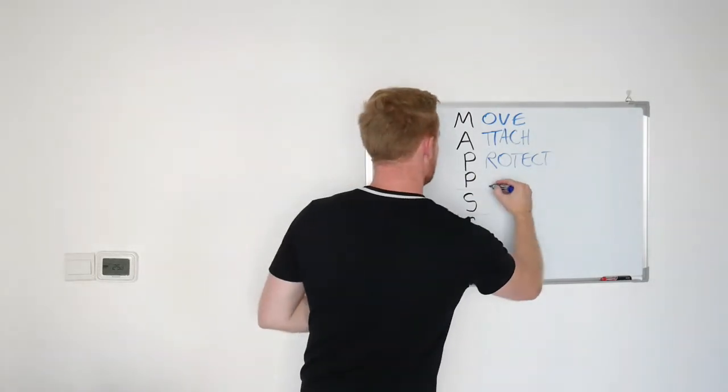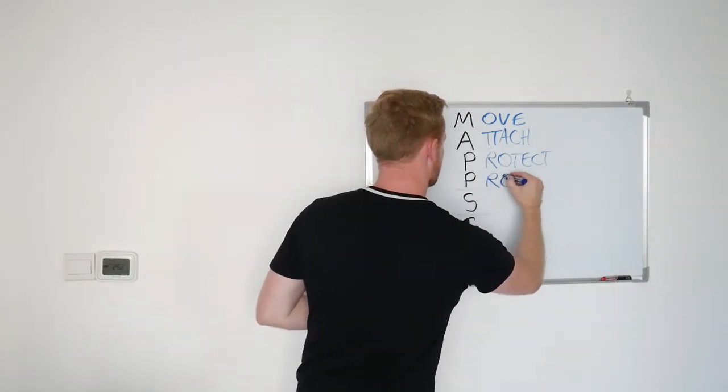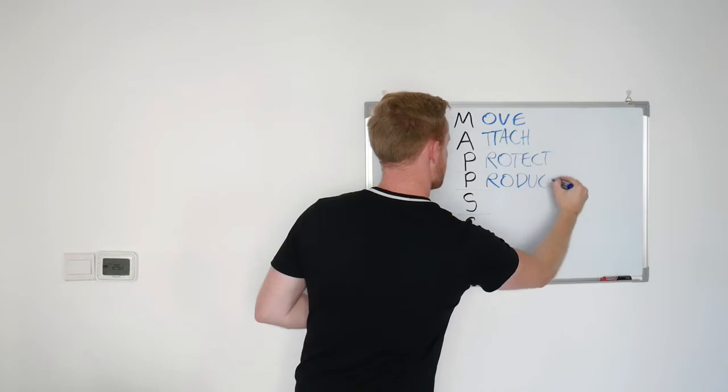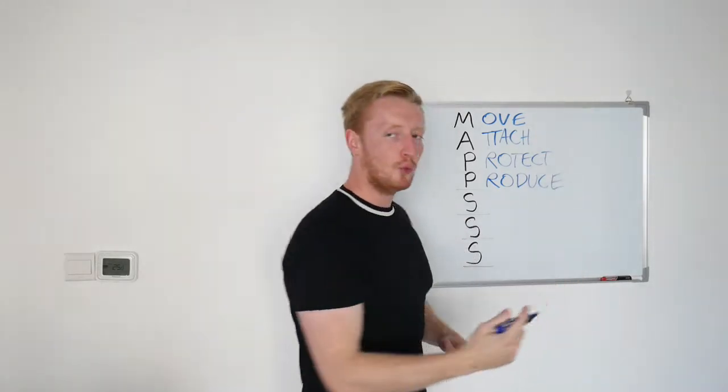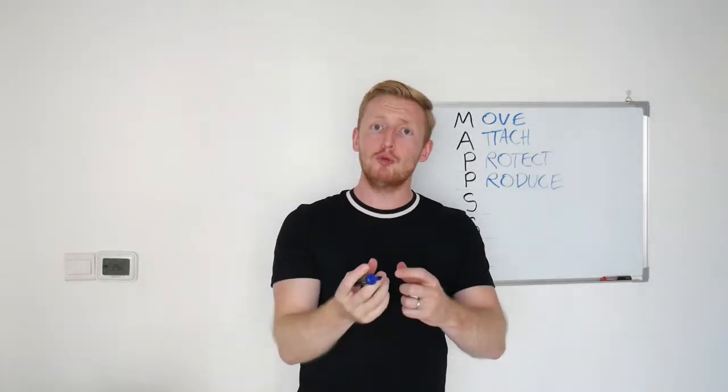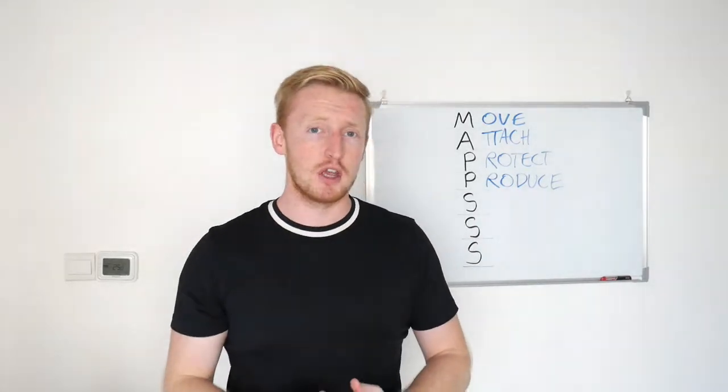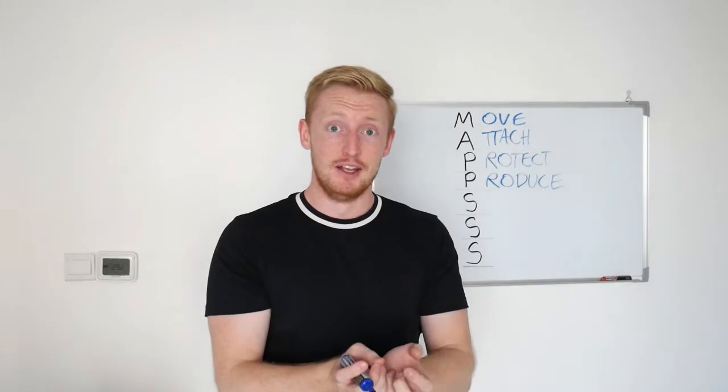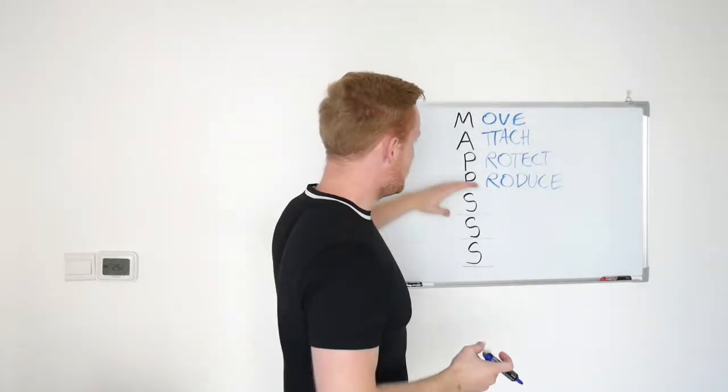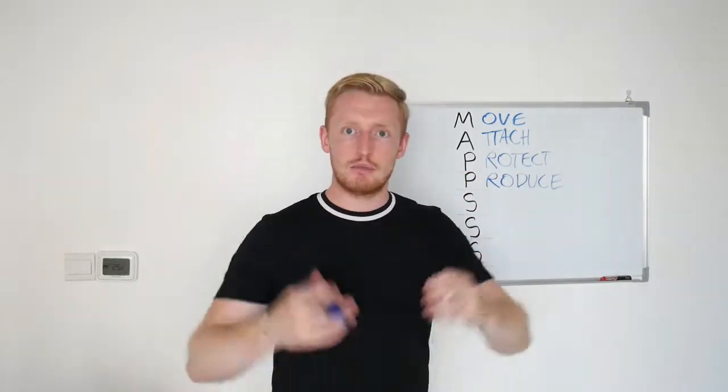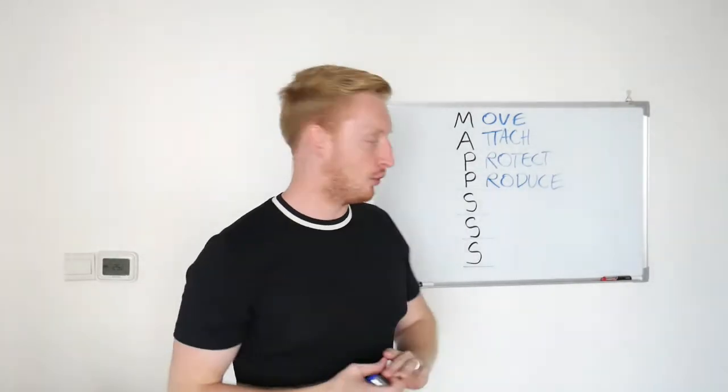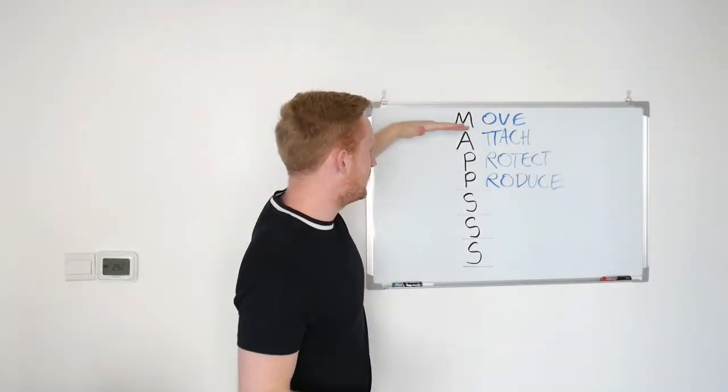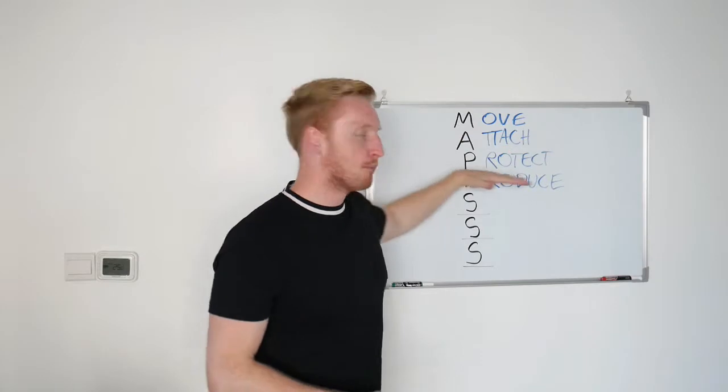Next up we have produce or production. I just put produce here. So inside bone we have bone marrow. And bone marrow can produce white blood cells. White blood cells are not just important, they're essential for our life because they help combat infection and disease which enters our body. So we've got movement, attachment, protection, production.